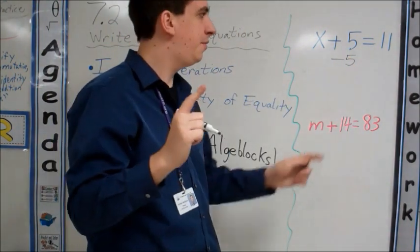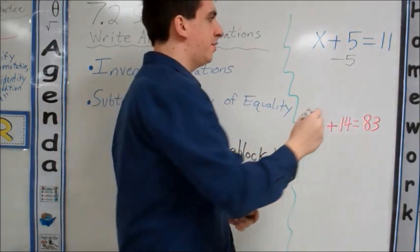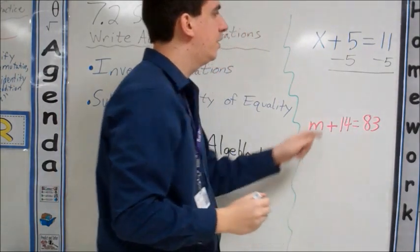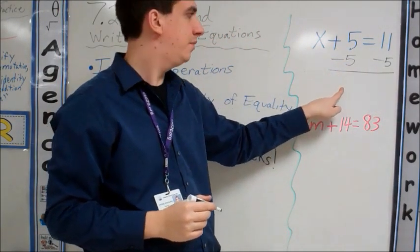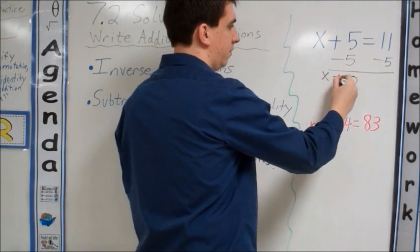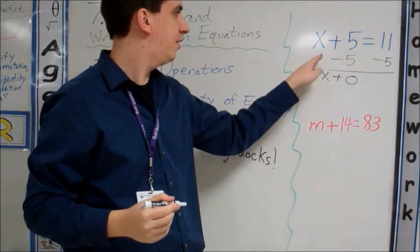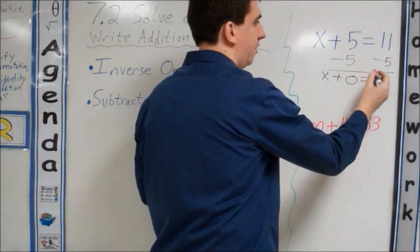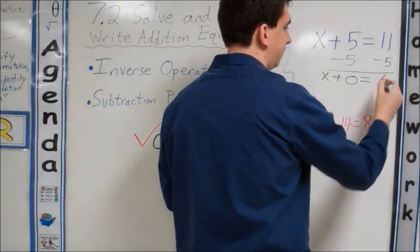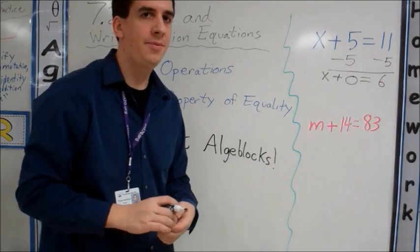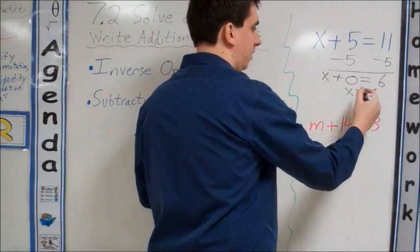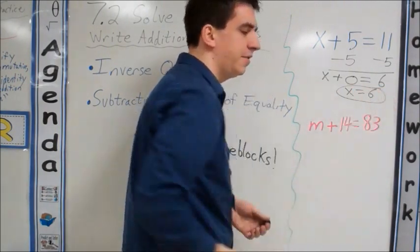And always think to yourself, if we do it on one side of the equation, we have to do it to the other side. 5 minus 5 is 0. The X will stay there. X is not subtracting anything. X equals 11 minus 5 is 6. We know from the identity property of addition that X plus 0, we can just write that as X. Therefore, X equals 6.